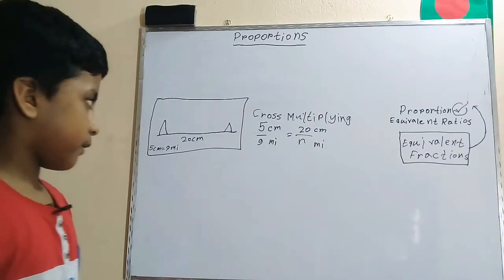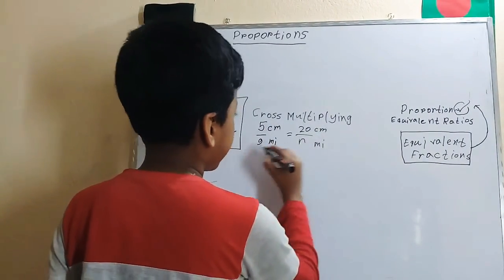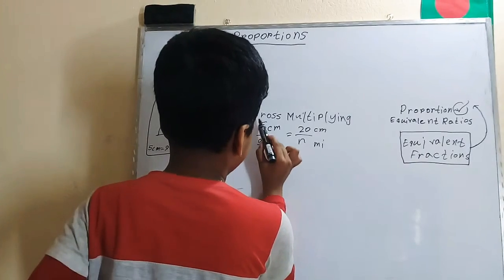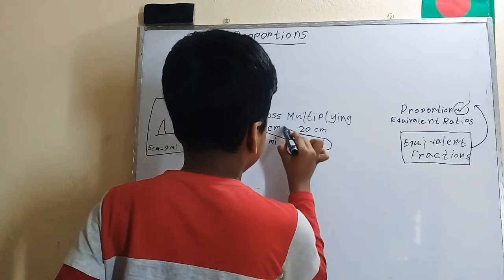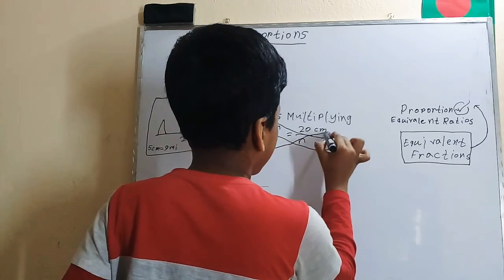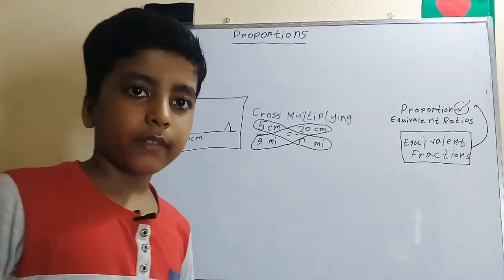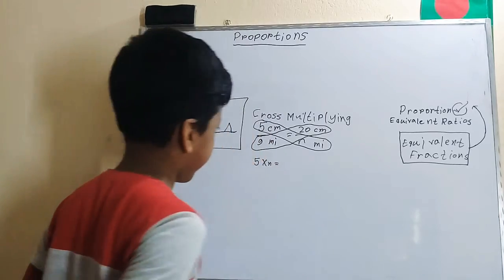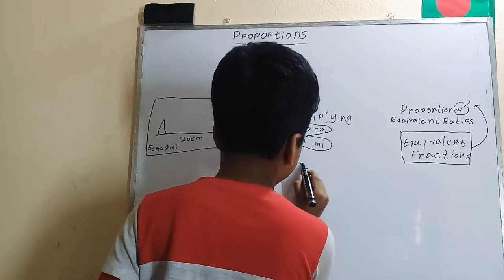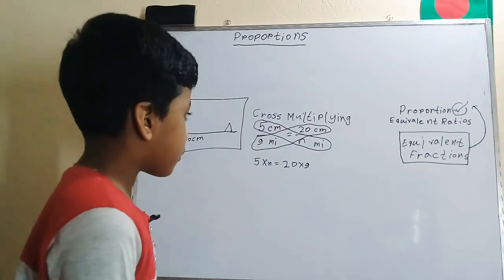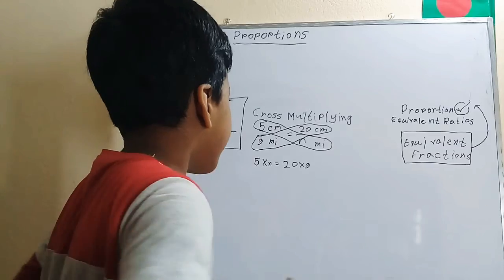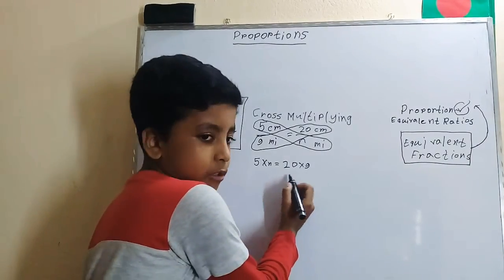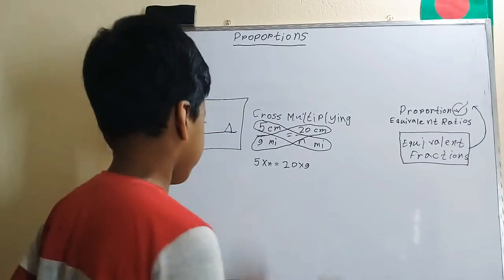Well, cross-multiply is just imagining an X shape that will tell us which two numbers we need to multiply. So let's imagine an X shape. So five and N will be multiplied on this side, and twenty and nine will be multiplied on this side. But when you finish this, it doesn't matter which product is on which side.